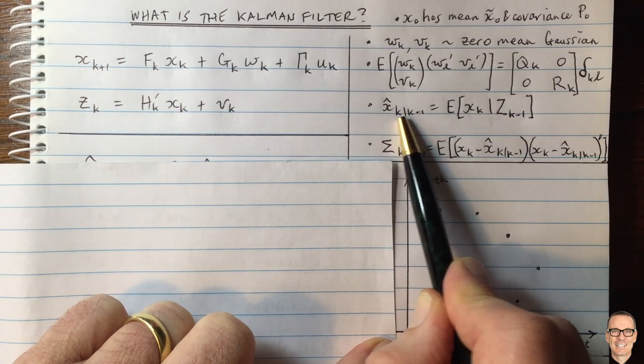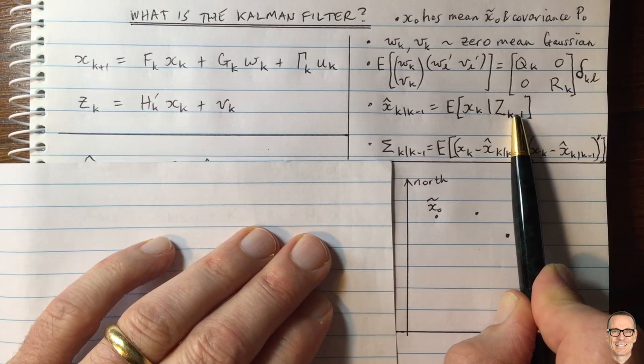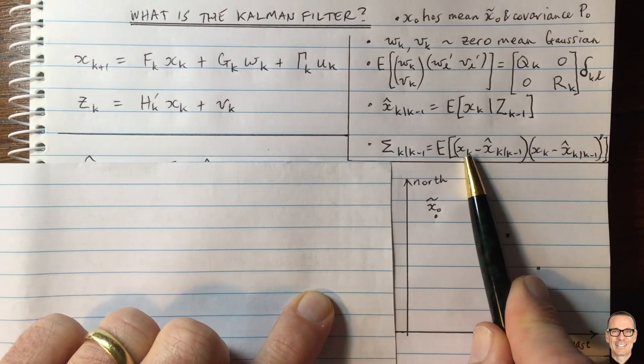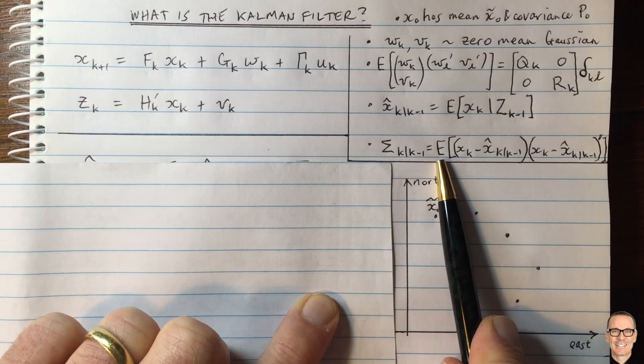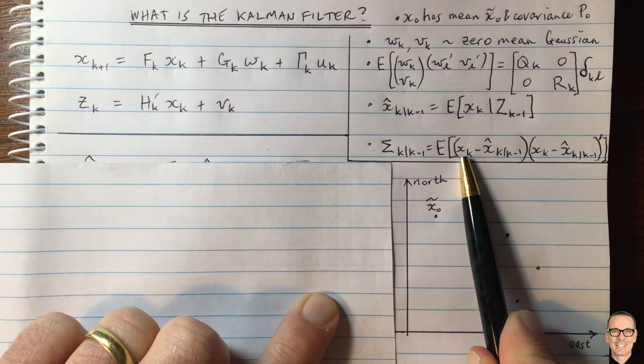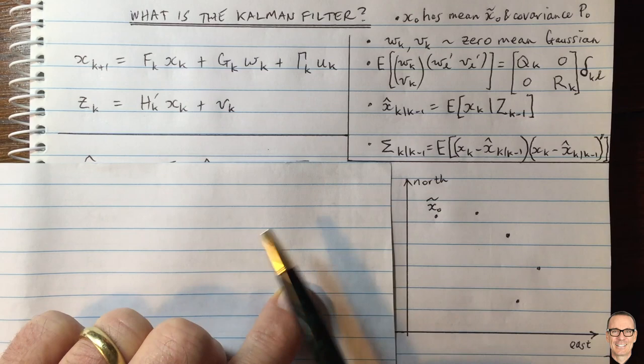If we have X subscript K vertical line K, that means the expected value of X given all of the measurements including the measurement at time K. We also have a covariance matrix for the estimate — the expected value of the error, which is the true state minus the estimated state. This matrix is something we're going to need in our filter as well. Now let's walk through the Kalman filter equations slowly so we really understand them.